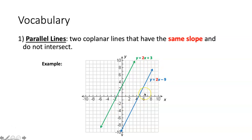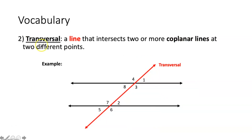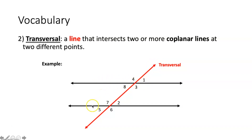They will never intersect. The next vocabulary term is a transversal — that's a line that intersects two or more coplanar lines at two different points. You can see the coplanar lines in black and the transversal in red. This transversal intersects the two coplanar lines at two different points; it's crossing through the two lines.